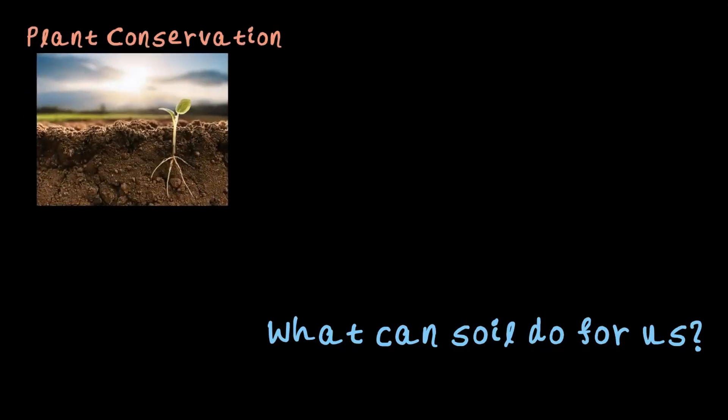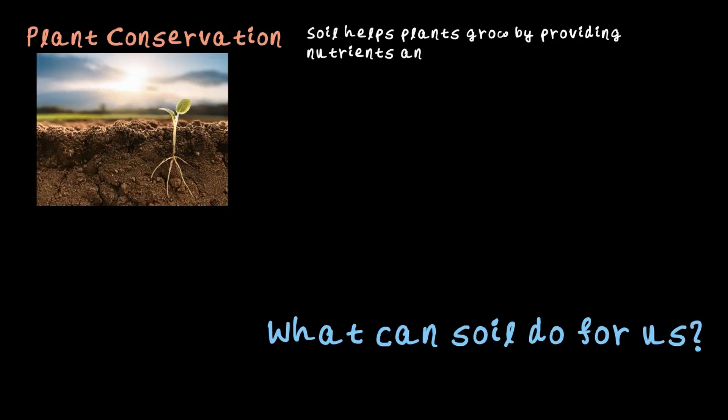Here is a big question: what can soil do for us? Soil is like nature's ultimate multi-tool — it's way more than just something plants grow in. First is plant conservation, the most important one. Soil provides the nutrients and support plants need to grow. Without it, we wouldn't have the green cover we rely on, and we wouldn't have any plant-based food to survive.